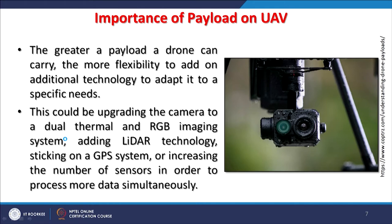Dual thermal and RGB imaging systems are very common nowadays. People are also experimenting with LiDAR technology because, as mentioned, these are very stable platforms. They can be used for LiDAR technology and of course they have GPS or GNSS systems inbuilt. So surveys can be planned very precisely and accurately, and these increasing numbers of sensors are expanding the possibilities of using UAVs.